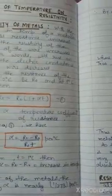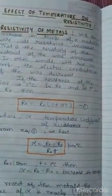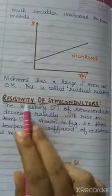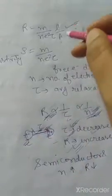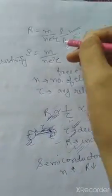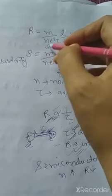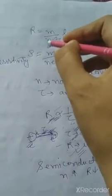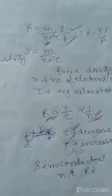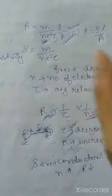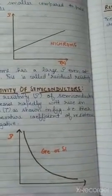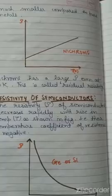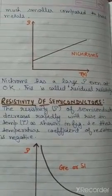This is the topic of the effect of temperature on resistivity. The two important cases are the resistivity of metals and, most often asked in examinations, the resistivity of semiconductors. Remember to use the formula R = ML/(NE²τA) to give the explanation — R depends on N and τ, where N is free electron density and τ is average relaxation time. Chapter 5 is now over. In the next lecture, we will discuss numericals. I hope you are completing the notes because soon I will check them. Thank you.